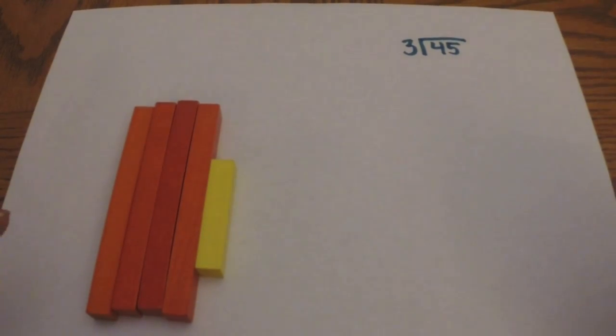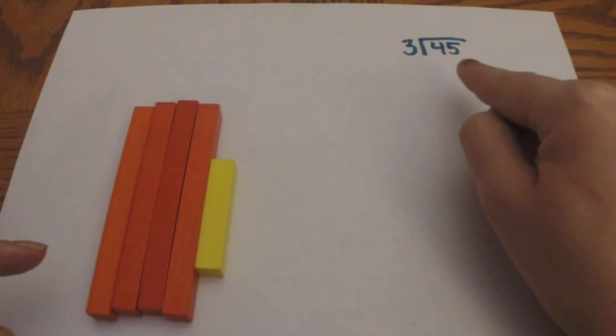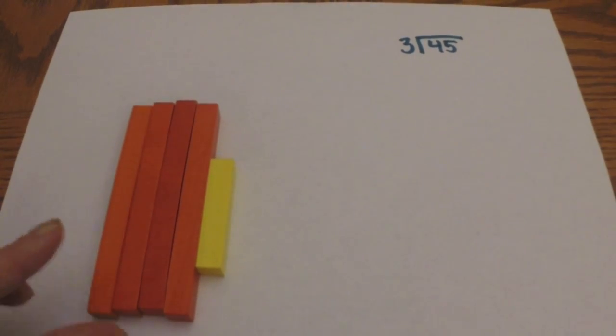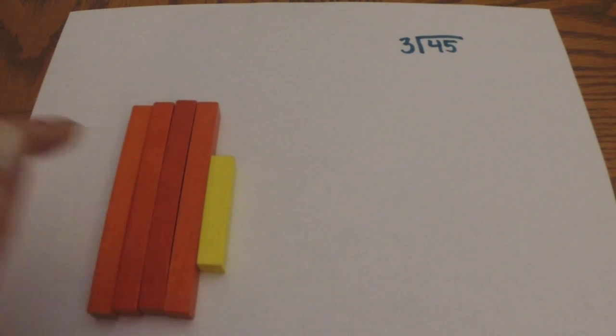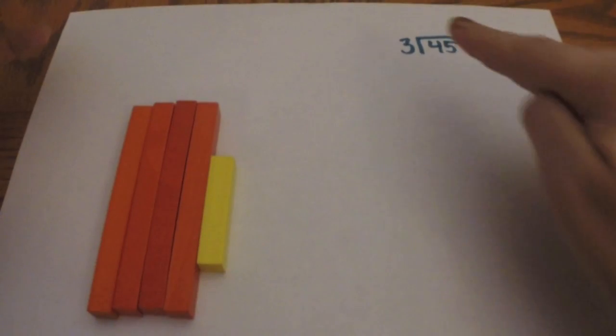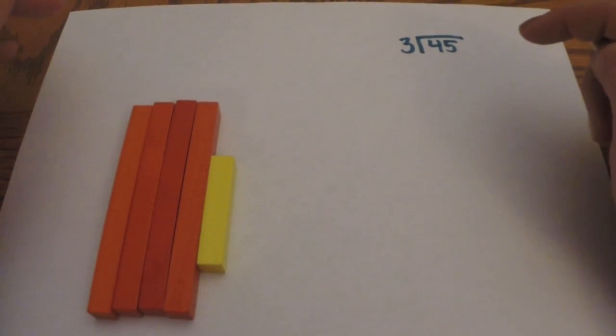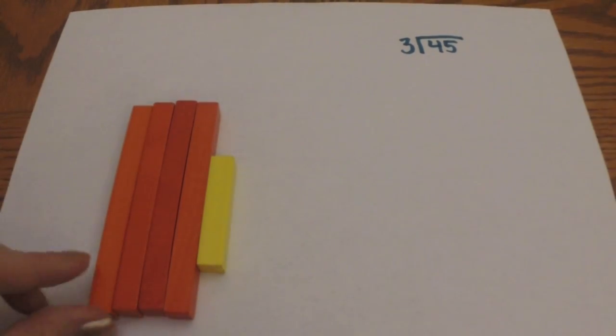So another cool thing we can do with Cuisenaire rods is we can even do a long division problem. And so right now I want to show you guys forty-five divided by three. And so right here we have four of our orange rods which equal ten, so forty. And then the yellow rod equals five, so we have forty-five right here. And what we want to do is, since we're dividing by three, we want to try to make a rectangle that is three units by something else. So what we're going to start with is our tens. And we're going to see, can we make a rectangle that has three ten rods so it would be three by ten. And we can.